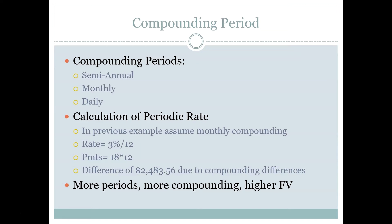Some other compounding periods we'll see commonly are daily — credit card interest is very often compounded daily, so they charge you interest every day but only ask you to pay monthly, which lets them earn a little extra compounding interest. Lots of complex financial structured settlements are also compounded daily. Another big compounding period we'll work with a lot in this class is semi-annual, meaning twice a year. This matters because in Chapter 7 — the bond chapter — corporate and government bonds are compounded semi-annually.